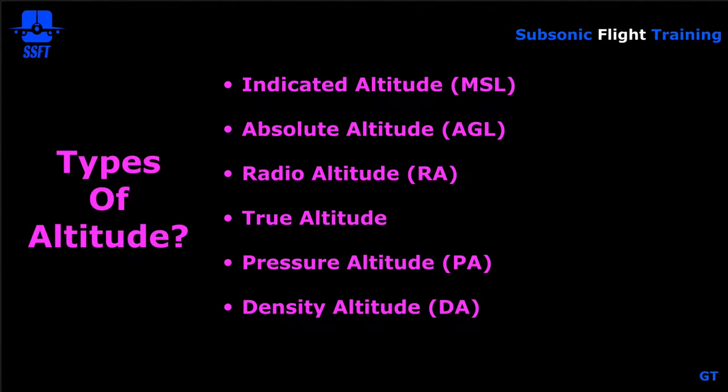There are many different types of altitude. Indicated altitude is the altitude shown on your altimeter — for the airport with the current altimeter setting, it's usually expressed as MSL or mean sea level, typically when using a QNH altimeter setting. Absolute altitude is altitude in terms of the distance above the ground directly below us, usually expressed as AGL or above ground level.